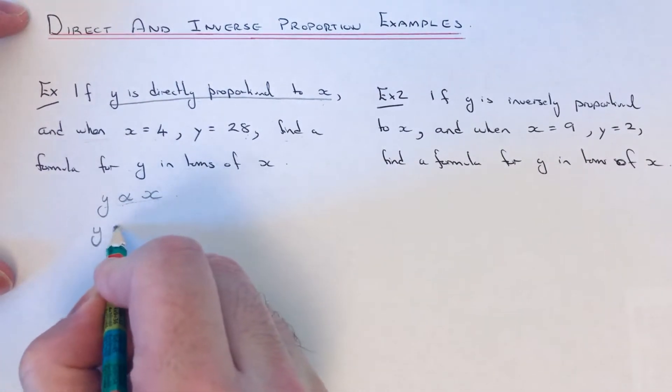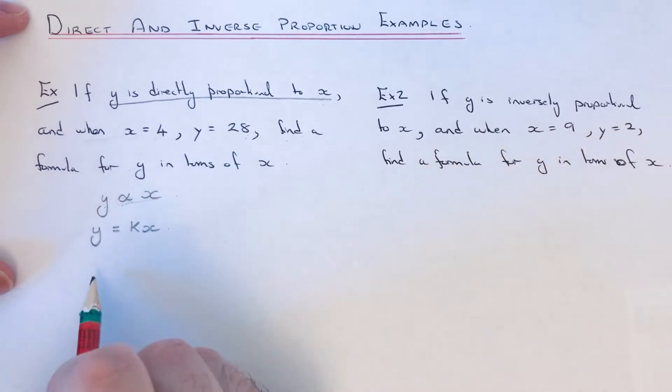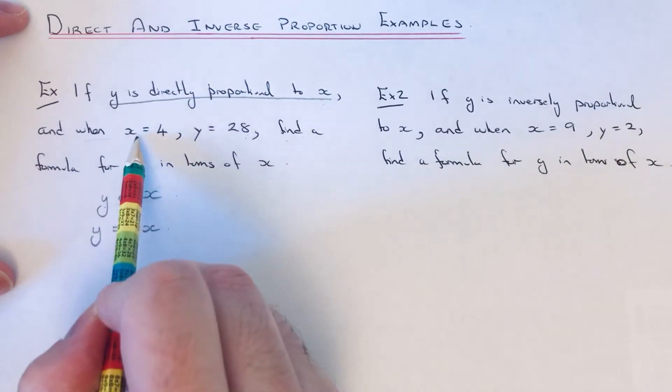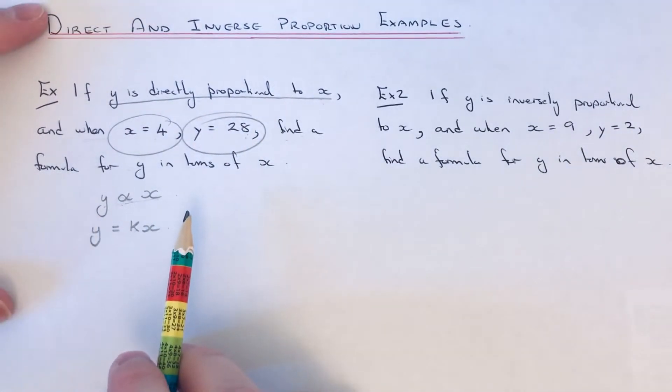So on our next line we put y equals k times x. And then all we need to do now is try to figure out what k is. To get k, you can use the two numbers that you're given in the question to find that value of k.